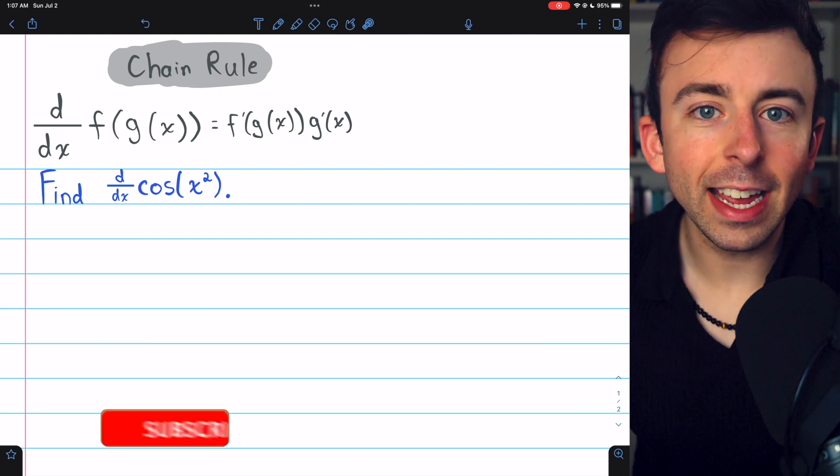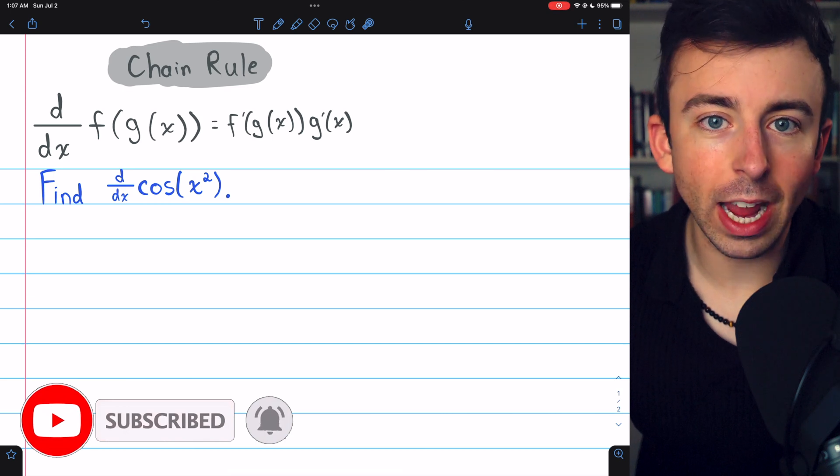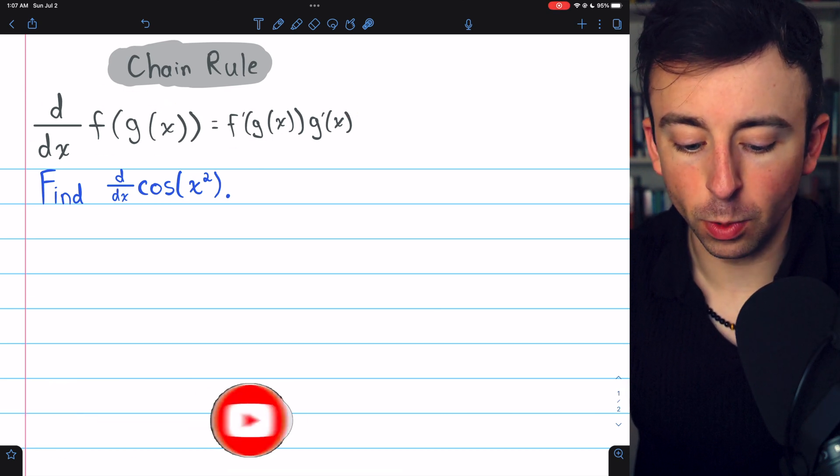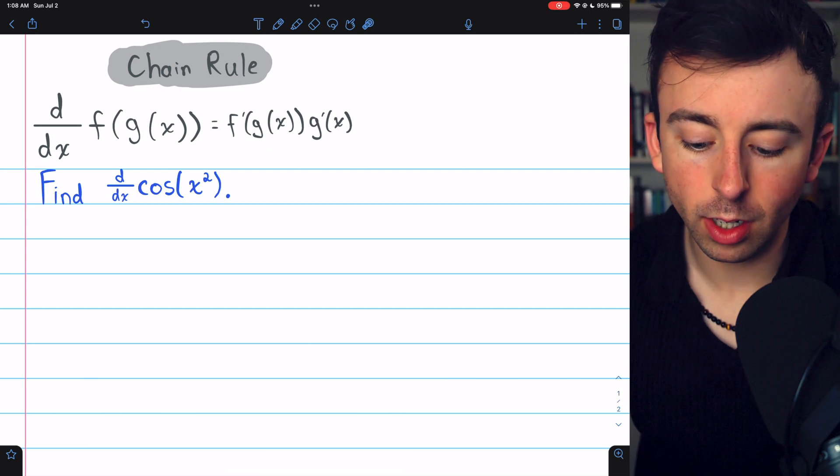Cosine of x squared is a composite function, so to take its derivative, we'll have to use the chain rule. Here is the chain rule: the derivative of a function f of g of x is f prime of g times g prime.